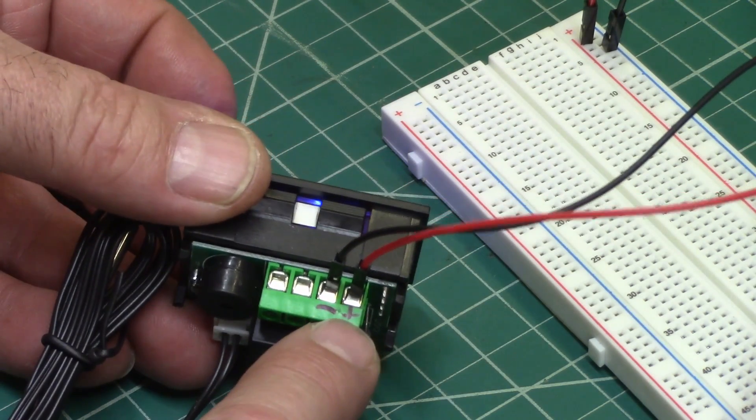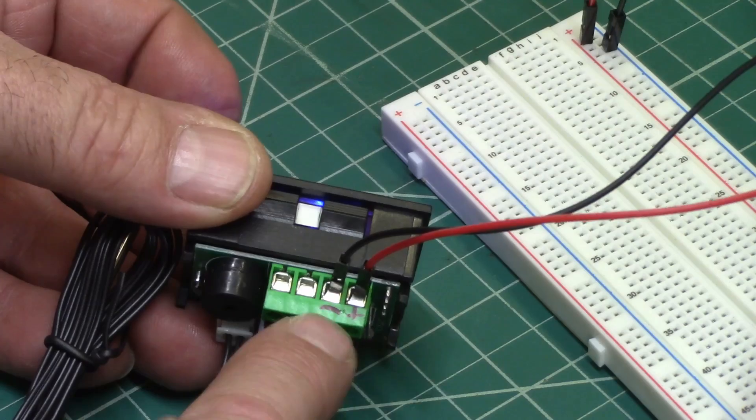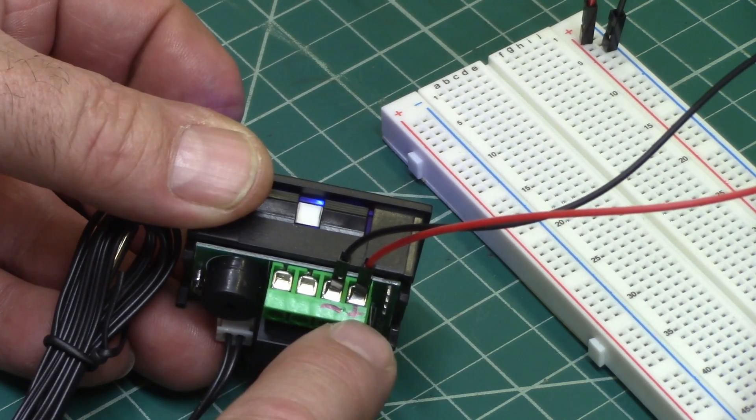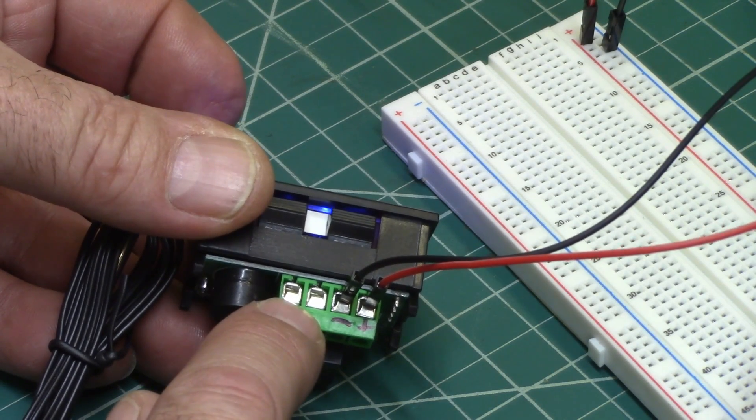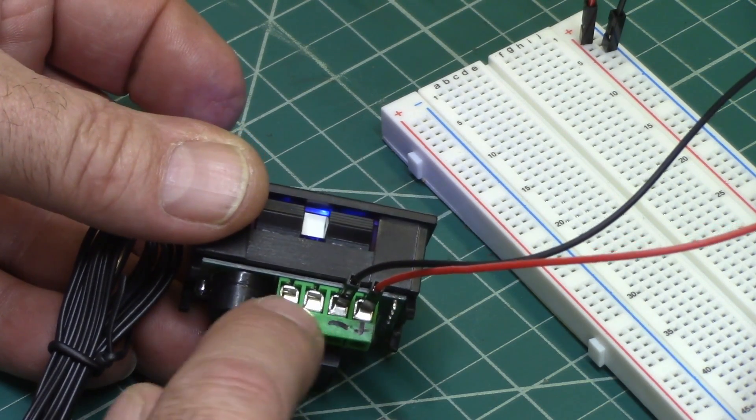So on the back, one of the little terminals is marked positive, one is marked negative. That's your 12 volts in, 12 volts positive, 12 volts negative, and then this other is just a relay contact, and so this is where your load's going to go.